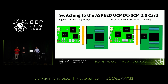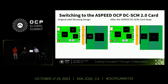What we did was take the Jabil Mustang design, had a little interaction with our engineering teams, and basically replaced it with our ASPEED DCSCM 2.0 board. We then worked with our partner AMI to bring all of this together and get the Mustang board to come up. And it didn't take that long to actually bring that up.